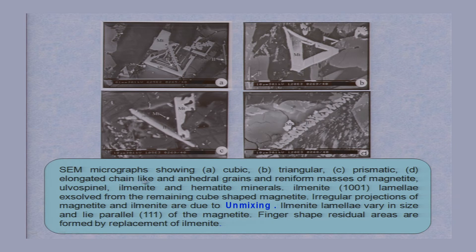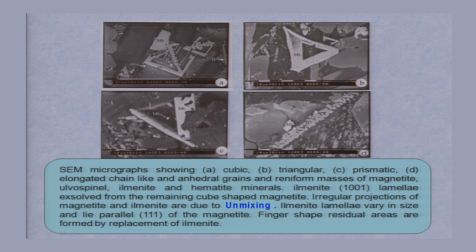This scanning electron micrograph shows: A — a cube-shaped magnetite crystal; B — a triangular-shaped magnetite crystal; C — prismatic magnetite crystals; D — elongated chain-like anhedral grains, like a bead-like structure. All the grains are anhedral magnetite grains, and sometimes they are reniform — reniform means kidney-shaped grains. Kidney-shaped grains of magnetite are present there as well.